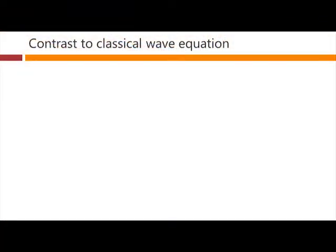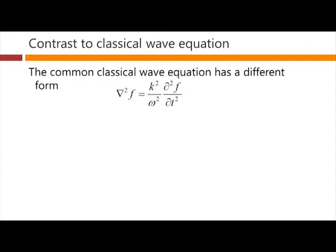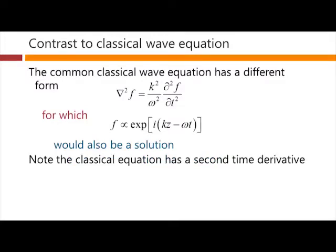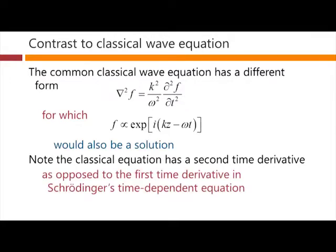There's an important contrast to the classical wave equation here. The classical wave equation we're used to has a second spatial derivative on the left, but also a second temporal derivative on the right. This plane wave is indeed a solution of the classical wave equation. But note that this classical wave equation has a second time derivative, as opposed to the first time derivative that we will find in our Schrödinger's time-dependent equation.